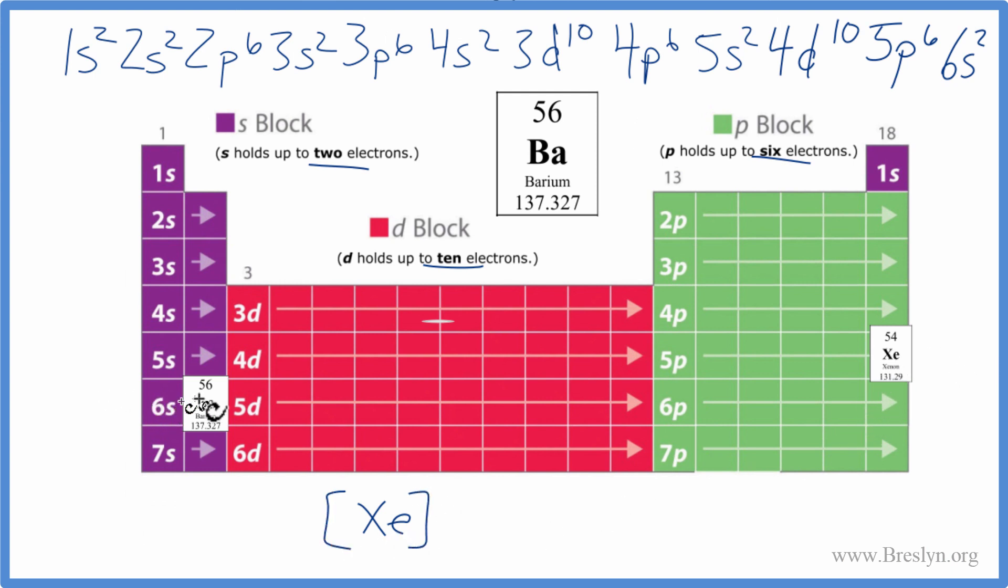So after the xenon, we have 6s1, 6s2, we put 6s2. And that's the condensed notation for barium.